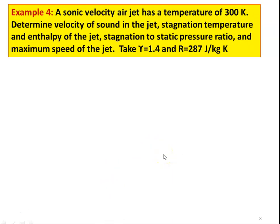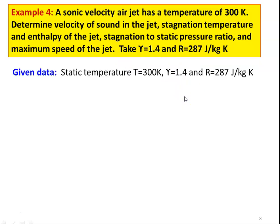Example 4: A sonic velocity air jet has a temperature of 300 Kelvin. Determine: velocity of sound in the jet, stagnation temperature, stagnation enthalpy, stagnation to static pressure ratio, and maximum speed of the jet. Take γ = 1.4, R = 287 J/kg·K. Given: static temperature T = 300 K. For sonic condition M = 1, so C = A. Velocity of sound: A = √(γRT) = √(1.4 × 287 × 300) = 347.2 m/s.